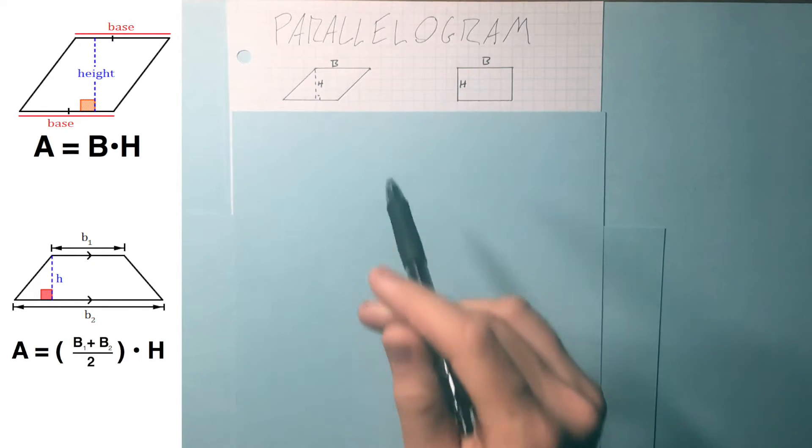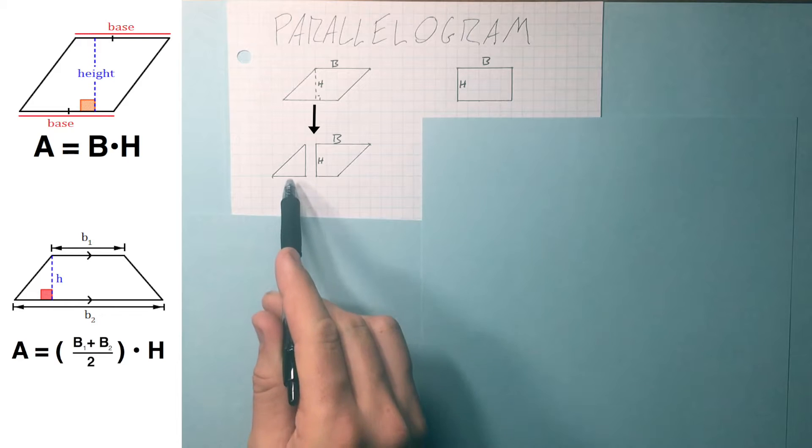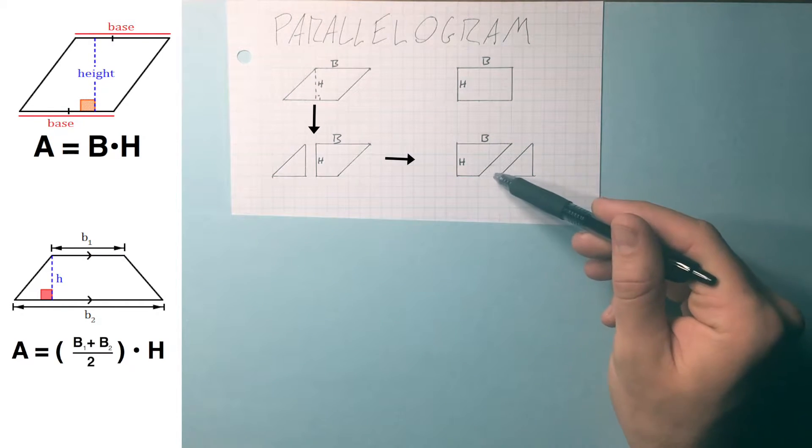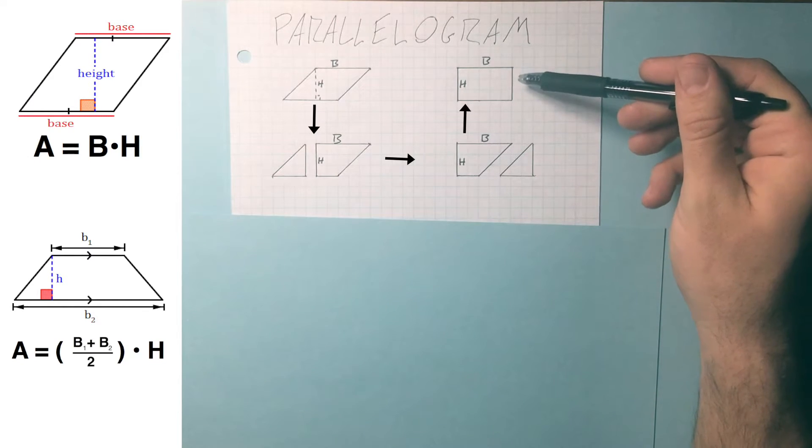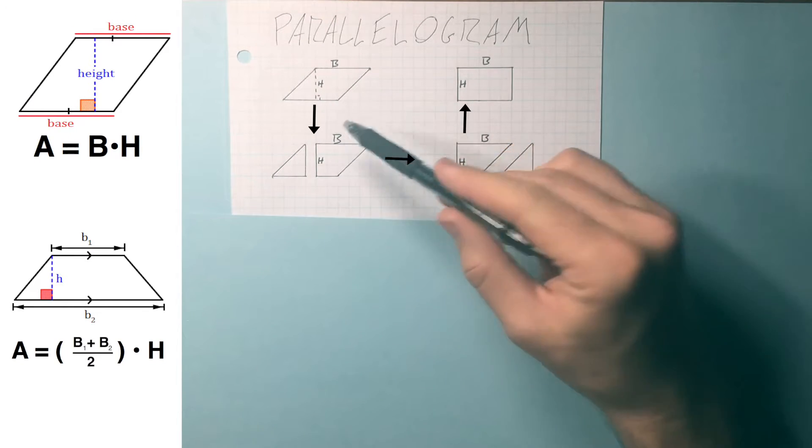What if I were to cut the height off this parallelogram, just like this, and then I move this triangle over to the other side. So this piece snaps into place, and it's a rectangle. That's why it is base times height.